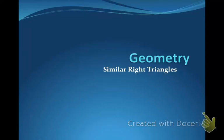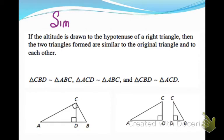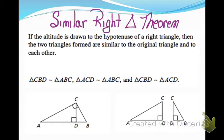What we're going to learn today is similar right triangles. There is a theorem called the similar right triangle theorem that says if you drop an altitude from the hypotenuse of a right triangle, so that's that segment CD there, that two triangles are formed.